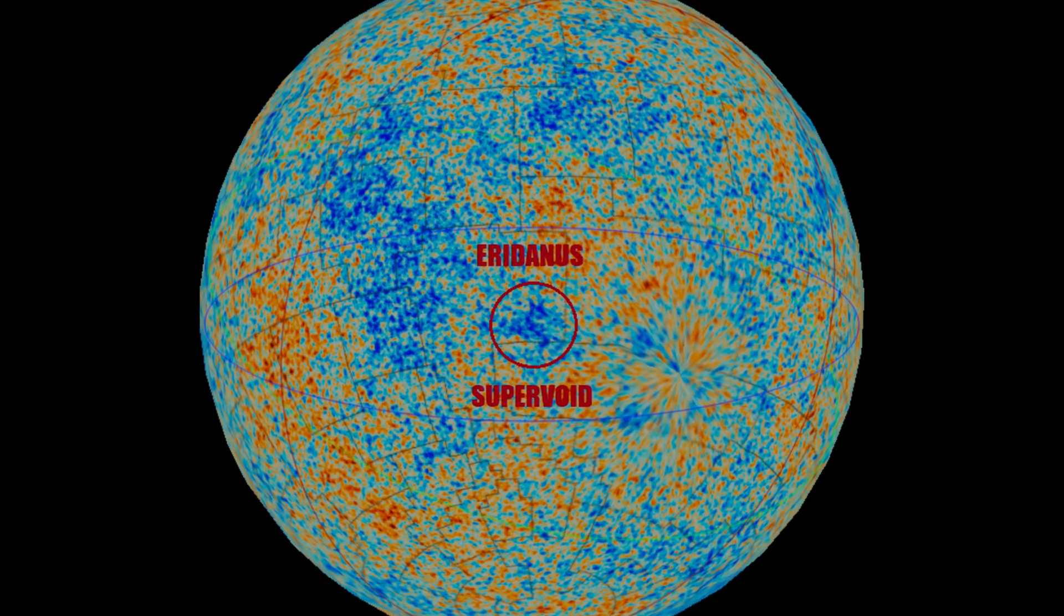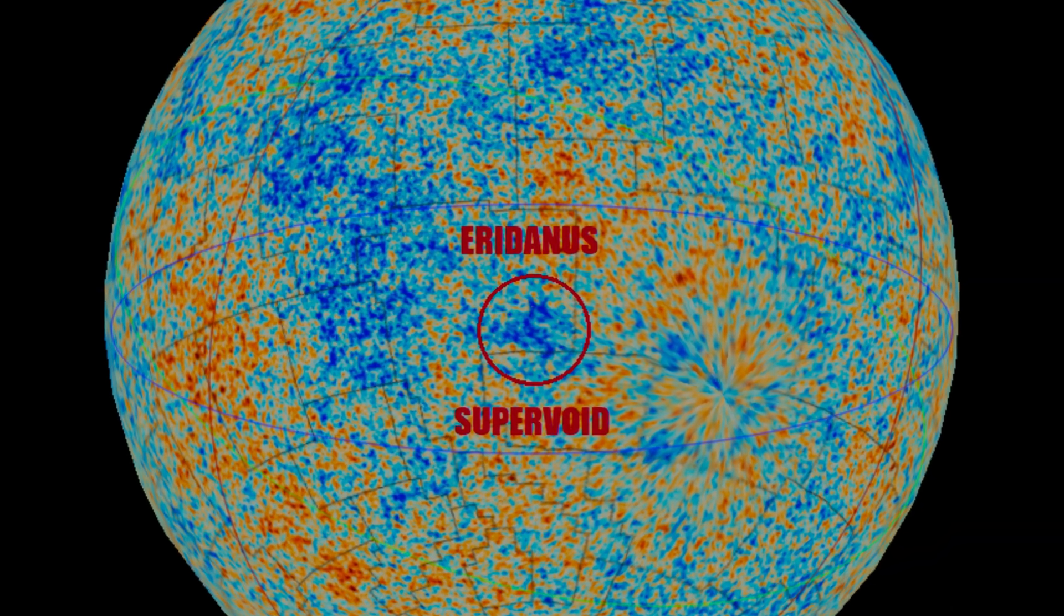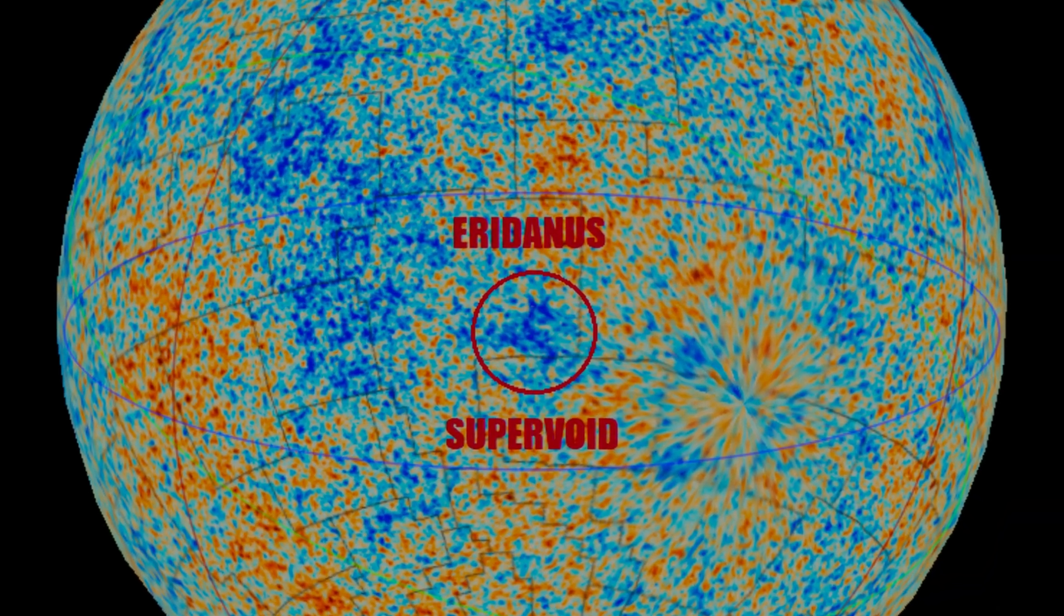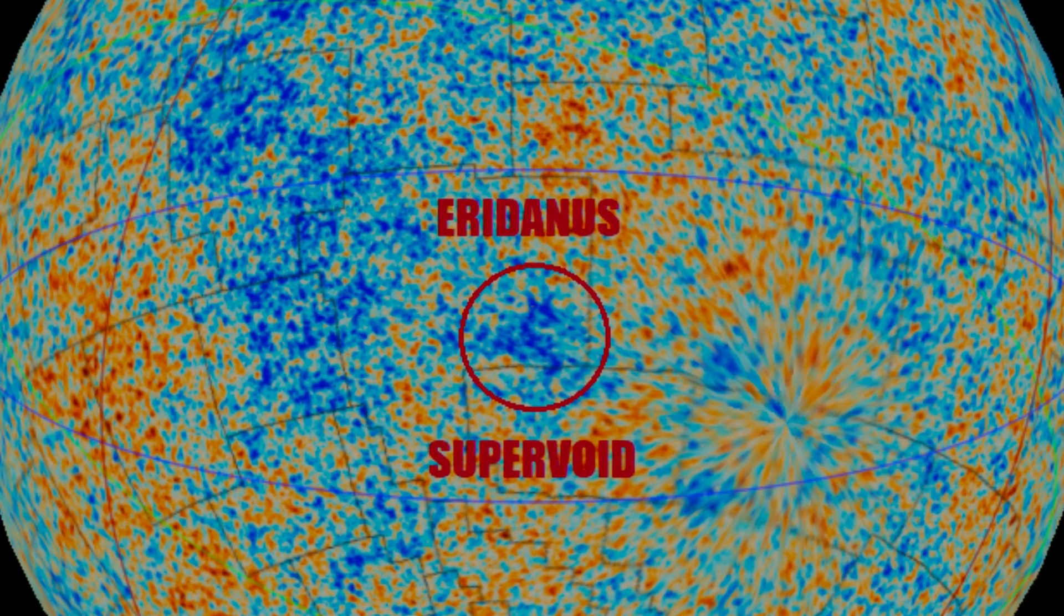To date, the most logical and popular explanation for the anomaly is a huge void. Not just a void, but a supervoid. One of the largest of all existing, possibly up to 1 billion light-years in diameter.